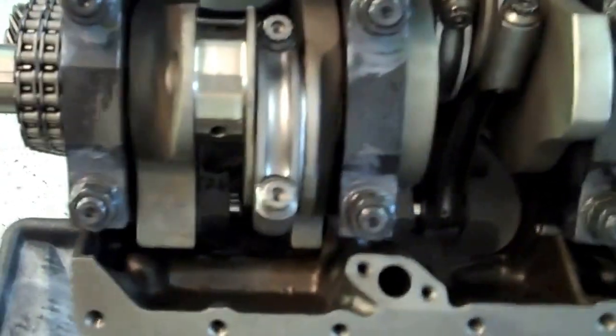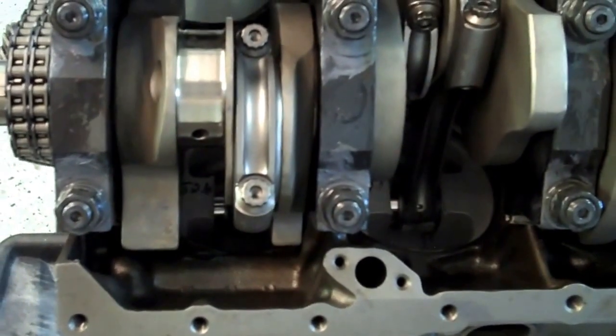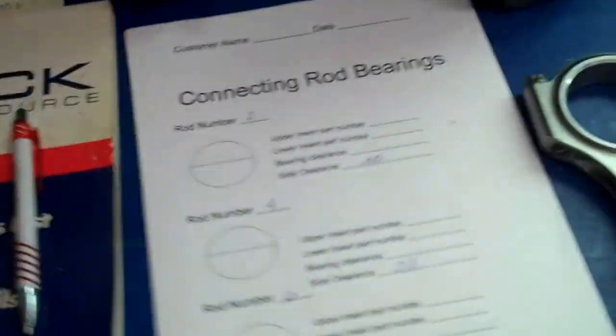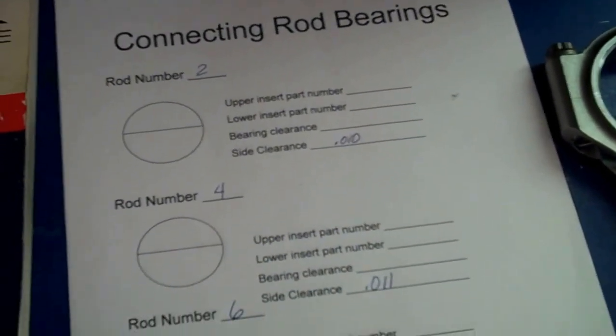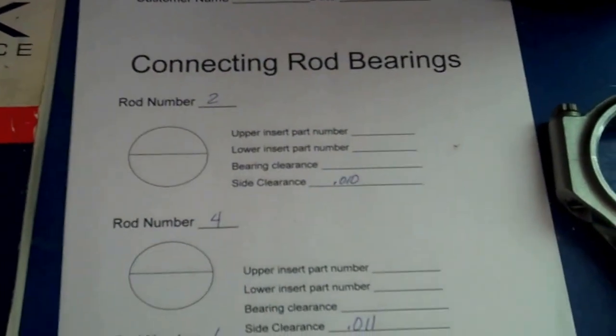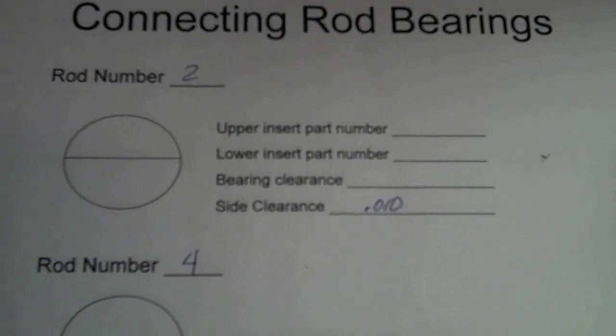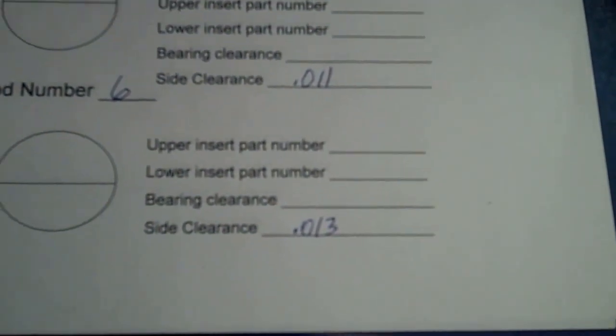Now, the ideal side clearance on a performance engine is somewhere between 10 and 20 thousandths. The Buick Motorsports manual calls that out. And what I like to do is try and keep it more towards the 10 thousandths, rather than opening it up towards the 20. But as you can see some of the numbers here, I've got 10 on one, 11 on another, here I've got 13.